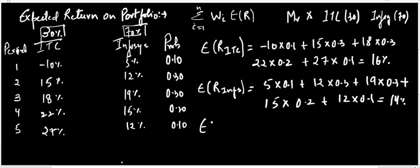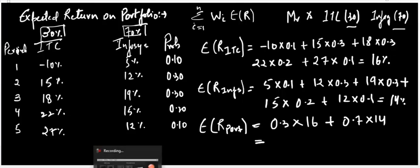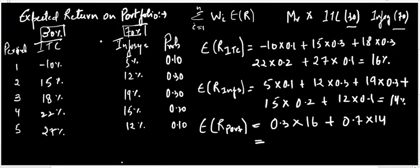Now I need to calculate the expected return on the portfolio, in which ITC Limited holds 30% and Infosys holds 70%. The weight of ITC is 0.3 and its expected return is 16%; the weight of Infosys is 0.7 and its return is 14%. The calculation is: (0.3 × 16) + (0.7 × 14), which gives an expected portfolio return of 14.6%. After calculating the returns on the portfolio, we can now move on to the calculation of expected risk on the portfolio.